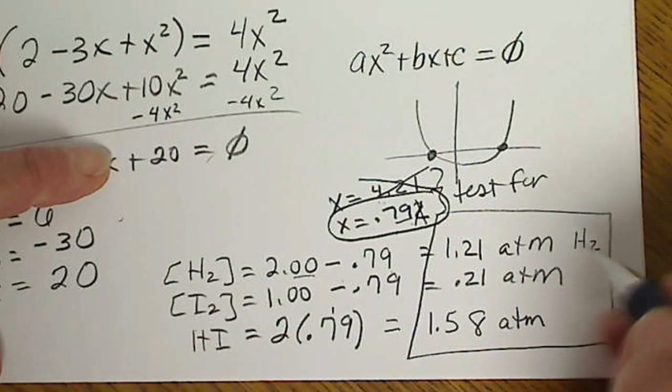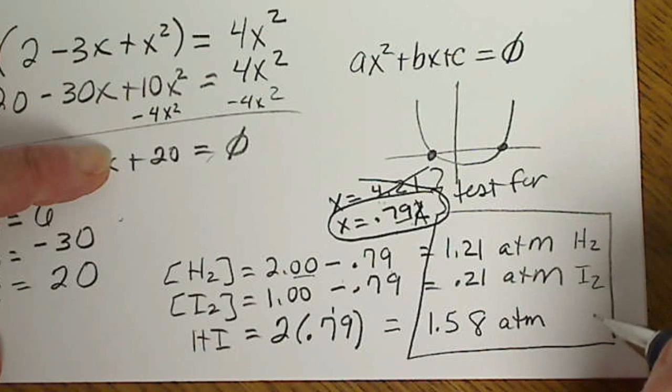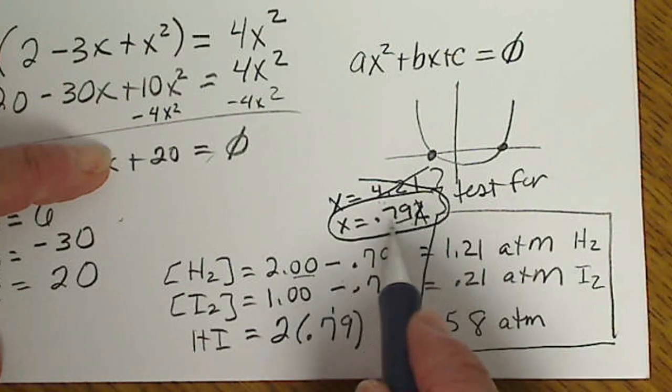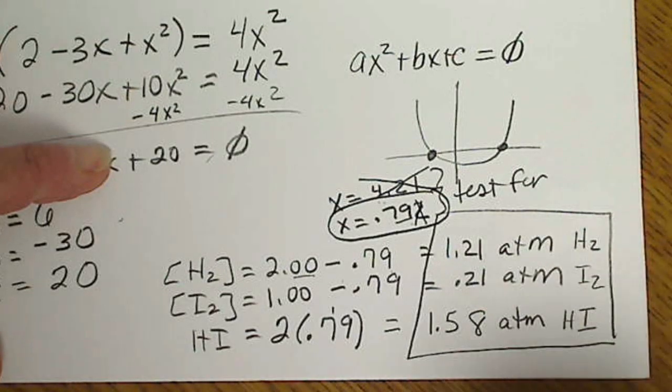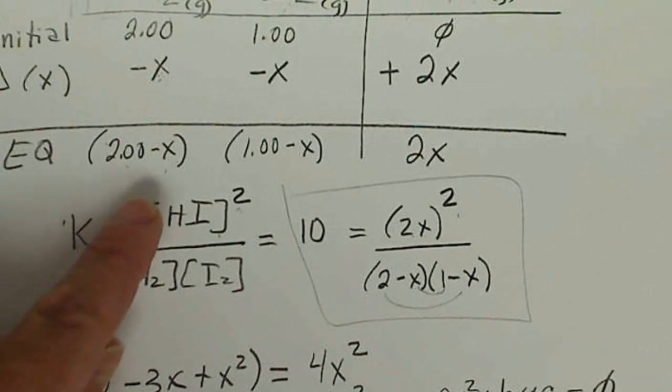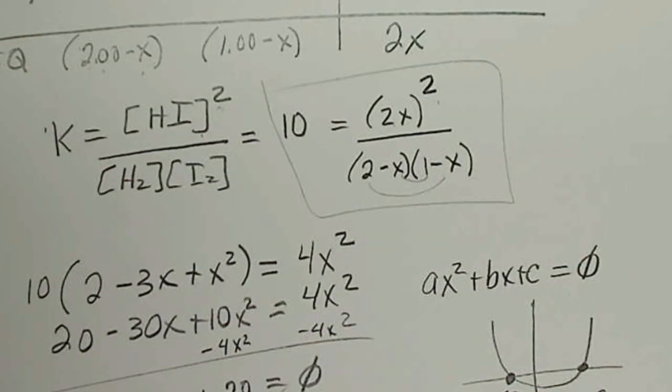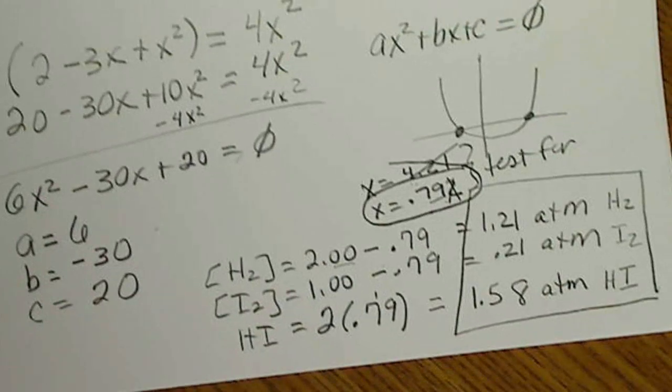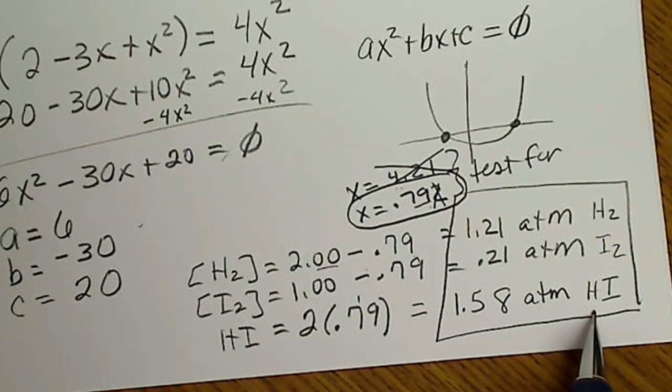So from a limited amount of data, we do solve for X, which is our unknown. And then once we have the reasonable value for X that makes physical sense, then we plug that value X back into these equilibrium expressions that we came up with.